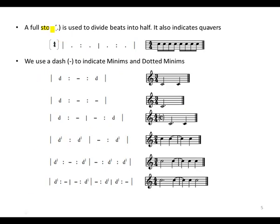A full stop is used to divide the beats into half. It also indicates quavers. So when we look at the four-four time, we can see that there are eight quavers in the bar. So the first quaver, second quaver, third quaver, fourth quaver, which makes up the first group, fifth quaver, sixth quaver, seventh quaver, and lastly, the eighth quaver. So it shows us that the full stop will divide the beats into halves.